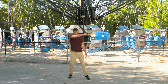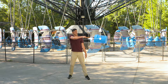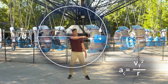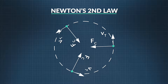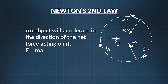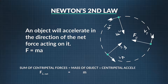If an object is moving in uniform circular motion, it is accelerating because its direction is constantly changing — this is called centripetal acceleration. Centripetal acceleration equals the tangential velocity squared divided by the radius of the circle. Centripetal acceleration is always perpendicular to the tangential velocity and always acts in the same direction as the centripetal force, toward the center. By Newton's second law, the sum of the centripetal forces equals the mass of the object times the centripetal acceleration.